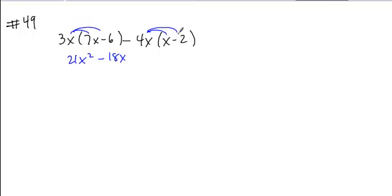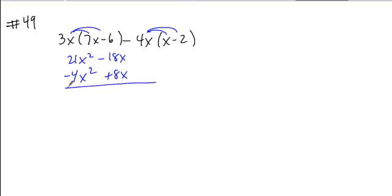and we'll distribute the negative 4x. I'm going to go ahead and vertically stack my like terms. I get minus 4x squared, and minus and minus becomes plus 8x.